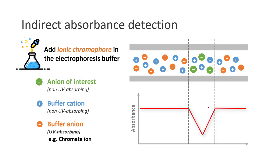One commonly used ionic chromophore is chromate ions, which absorb strongly at 254 nanometer.